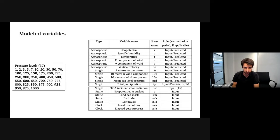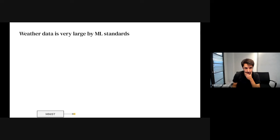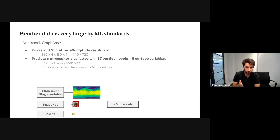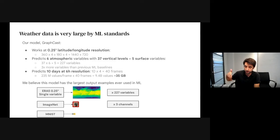The weather problem is very large for typical machine learning standards. Compared to MNIST or ImageNet, GraphCast models at 0.25 degree resolution — each variable is like a very high resolution image with more than 200 channels instead of 3. Because we predict 10 days ahead at 6-hour resolution, we predict about 40 frames each with 200 variables, totaling about 35 gigabytes — probably one of the largest output examples in machine learning.